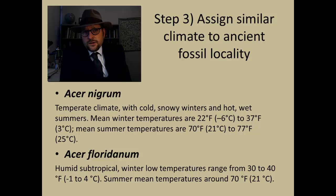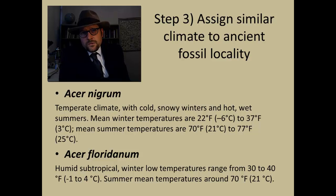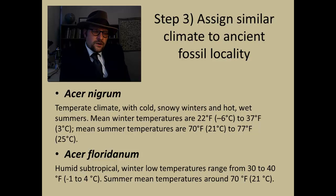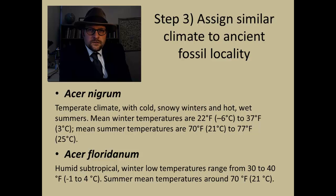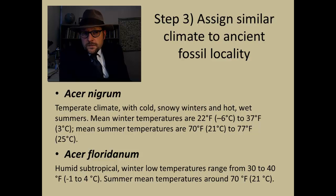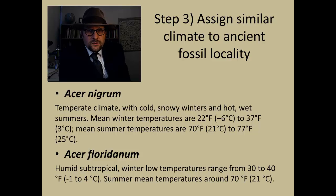If our fossil belongs to Acer nigrum, we would interpret a temperate climate with cold snowy winters and hot wet summers — mean annual winter temperatures around 22 degrees Fahrenheit (negative 6 Celsius), below freezing, to 37 degrees Fahrenheit (3 degrees Celsius). If the fossil belongs to Acer floridanum, we would interpret a humid subtropical climate, never getting much below freezing — low temperatures in winter ranging from 30 to 40 degrees Fahrenheit (negative 1 to 4 degrees Celsius), summer mean temperatures around 70 Fahrenheit (20 Celsius). So that is a pretty big difference, just depending on how we identify this particular fossil.